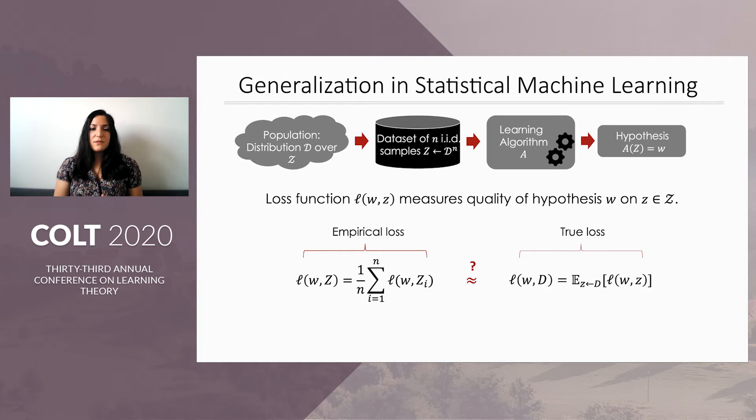Ideally, we hope that the sample set Z is a good representation of the population, and so minimizing the empirical loss would be a good strategy if we really want to minimize the true loss. So the question on generalization is: how can we ensure that the empirical loss is a good proxy for the true loss?